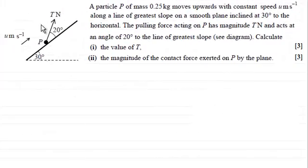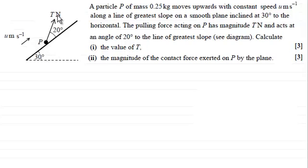We have a particle P of mass 0.25 kilograms moving upwards with a constant speed of u meters per second along a line of greatest slope on a smooth incline at 30 degrees to the horizontal. The pulling force on P has a magnitude of T newtons and acts at an angle of 20 degrees to the line of greatest slope. We need to calculate the value of T and the magnitude of the contact force exerted on P by the plane.